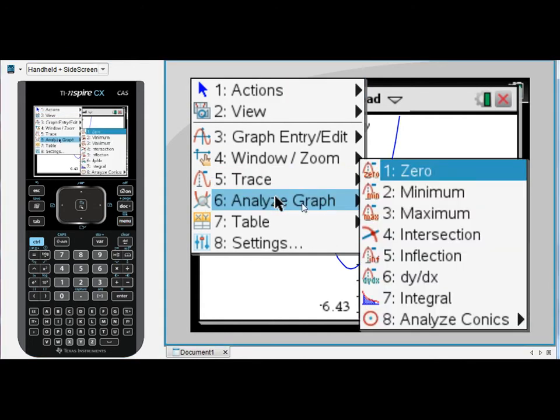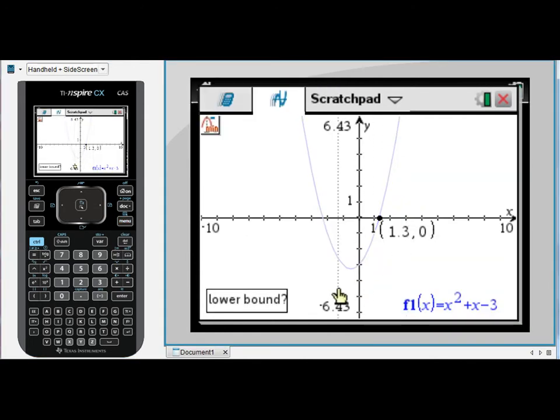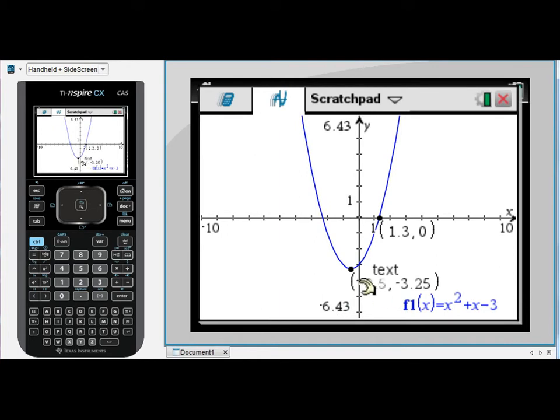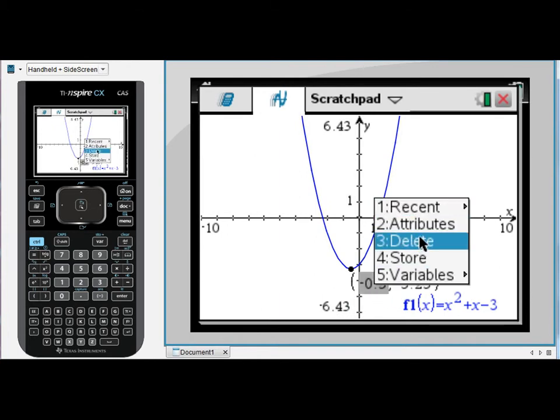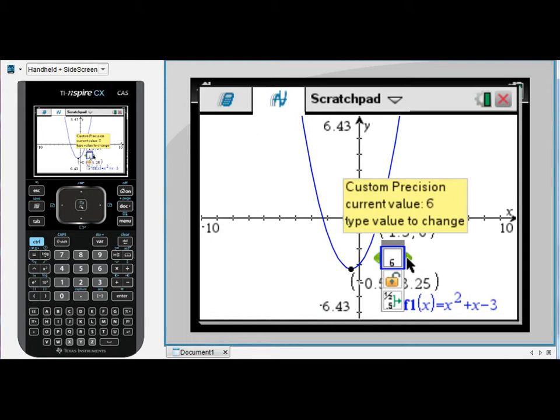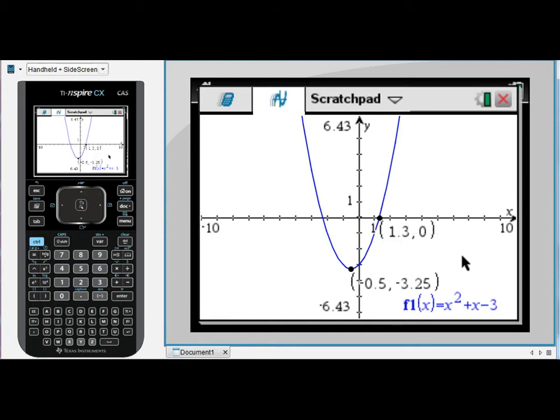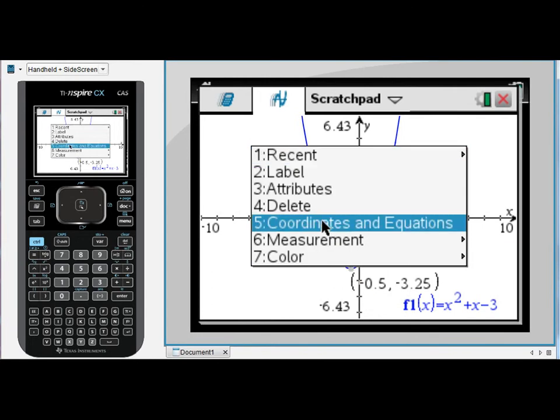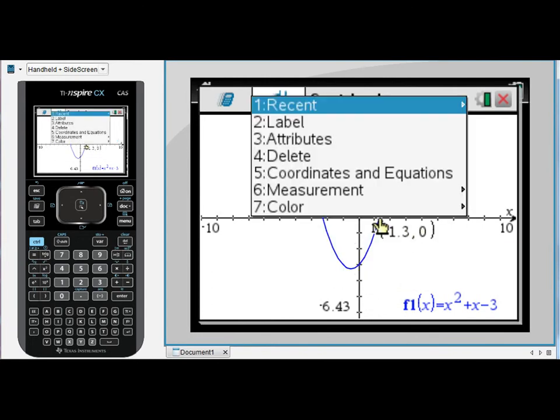In this case we'll see if we use analyze graph, minimum, there's our minimum point. If you actually have a look at these values, look at the attributes, increase the number of decimal places shown. It doesn't change the value, so this is in fact an exact point, negative 0.5, negative 3.25. So finding exact values in the graphing screen can be difficult, but making use of the definition in the calculator screen to do so makes your life a little bit easier. I'm just going to get rid of this minimum point just to make a bit of room here.